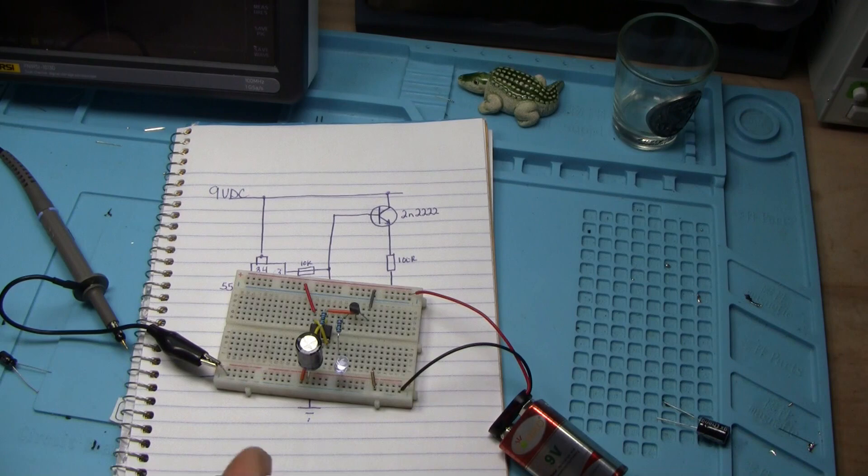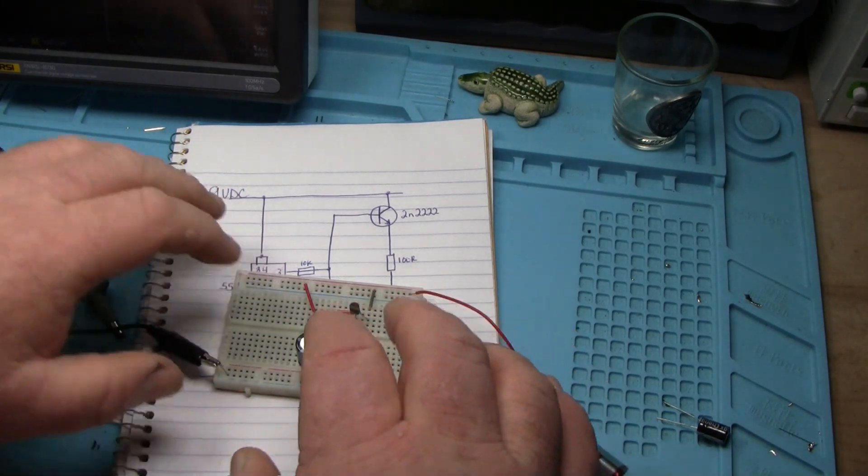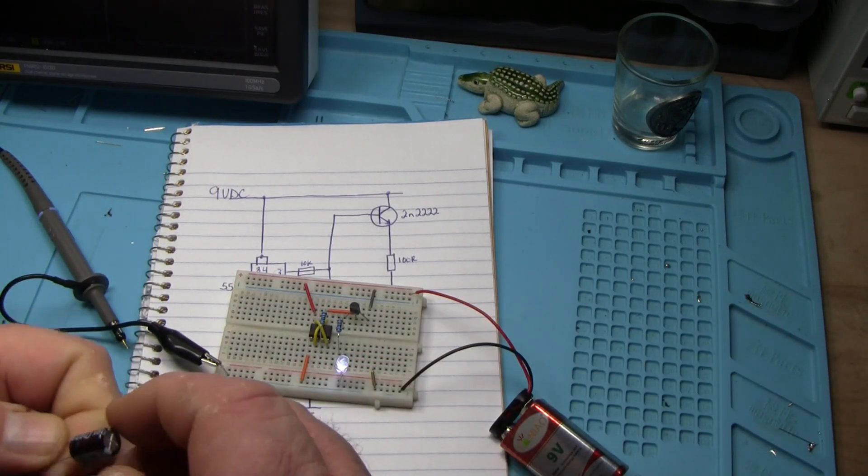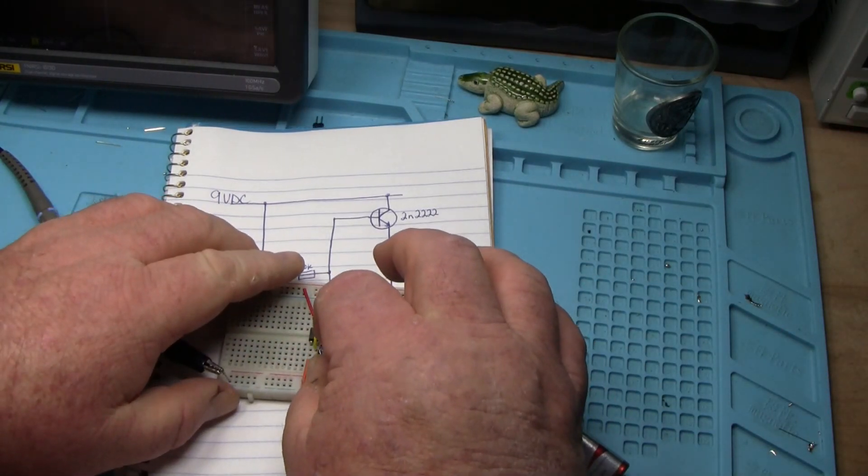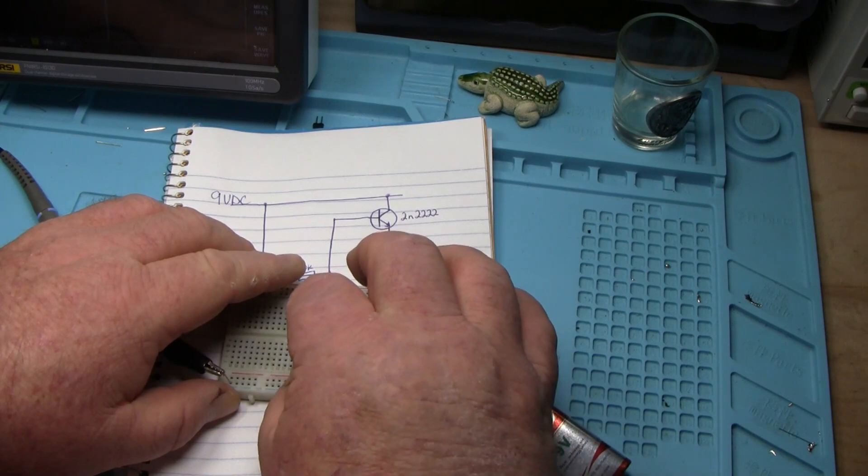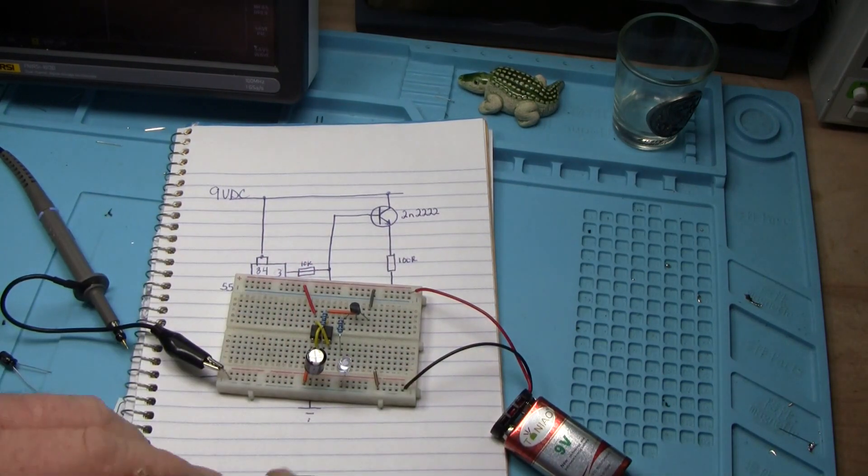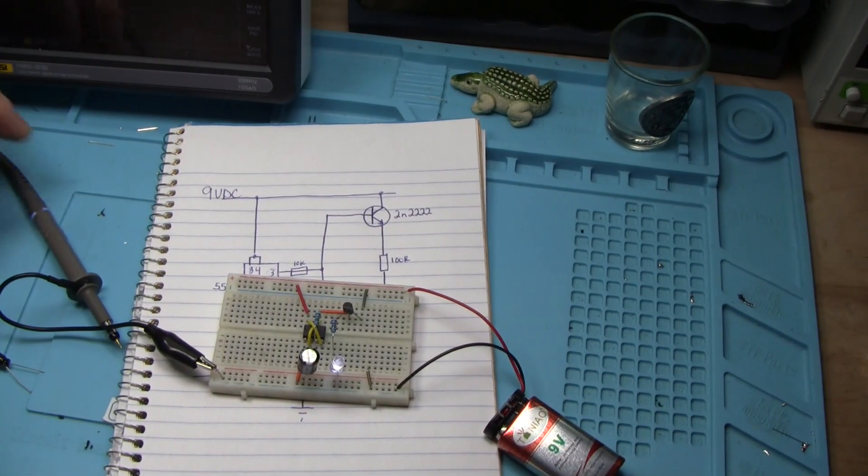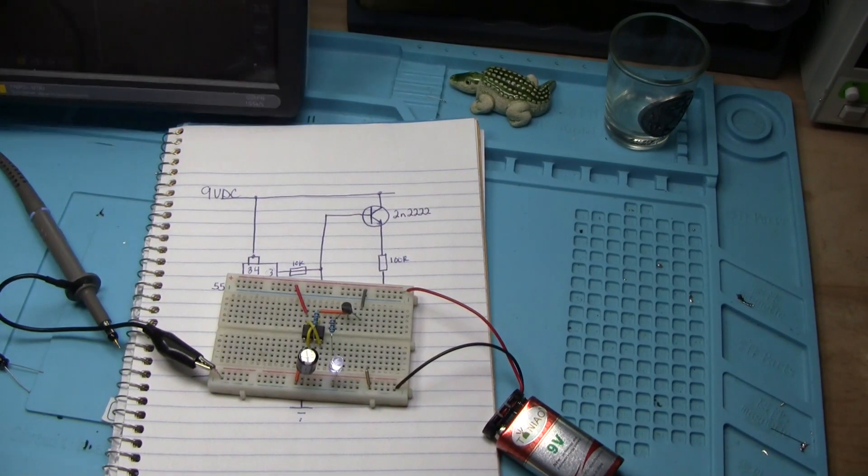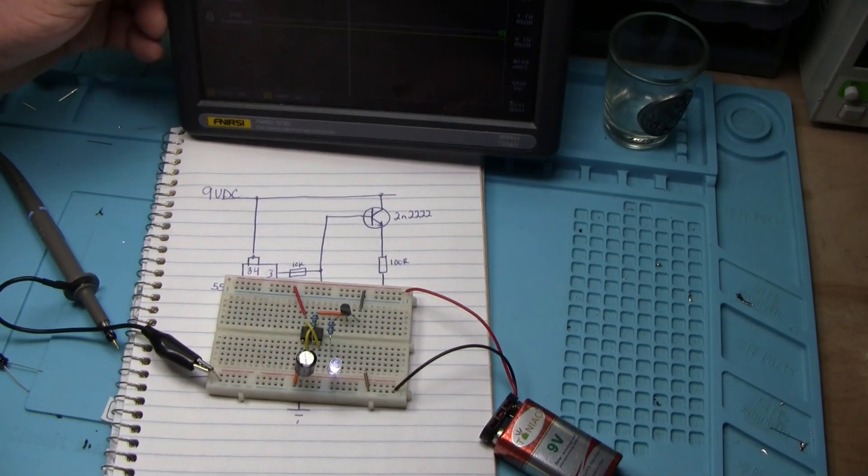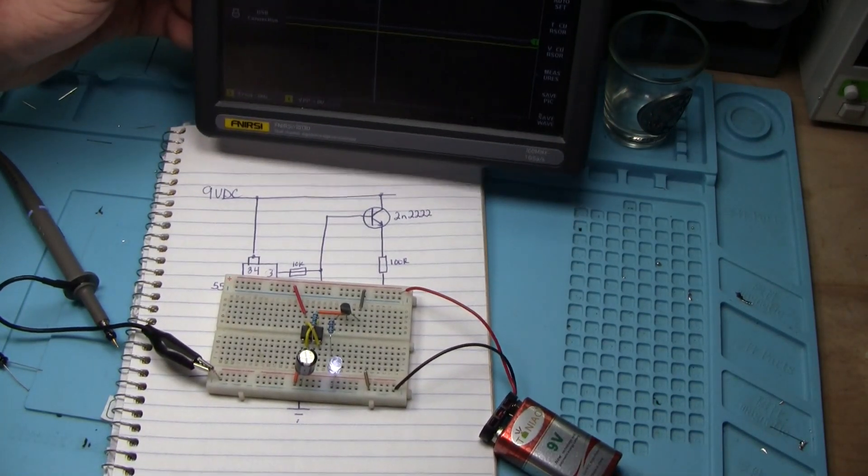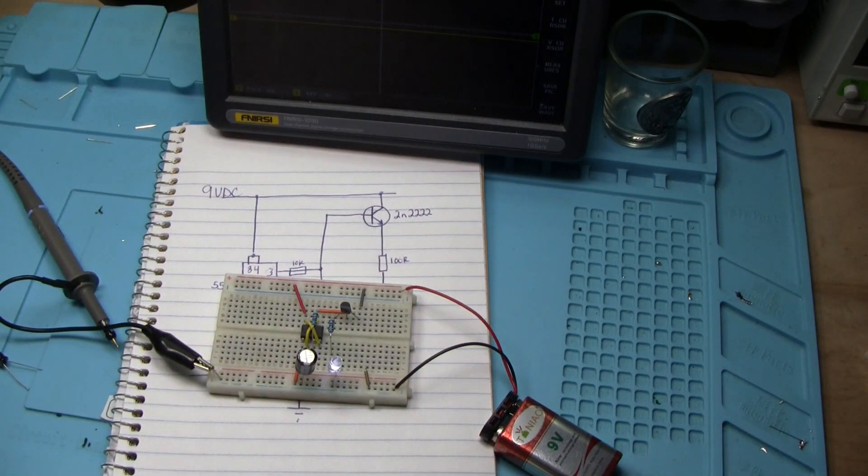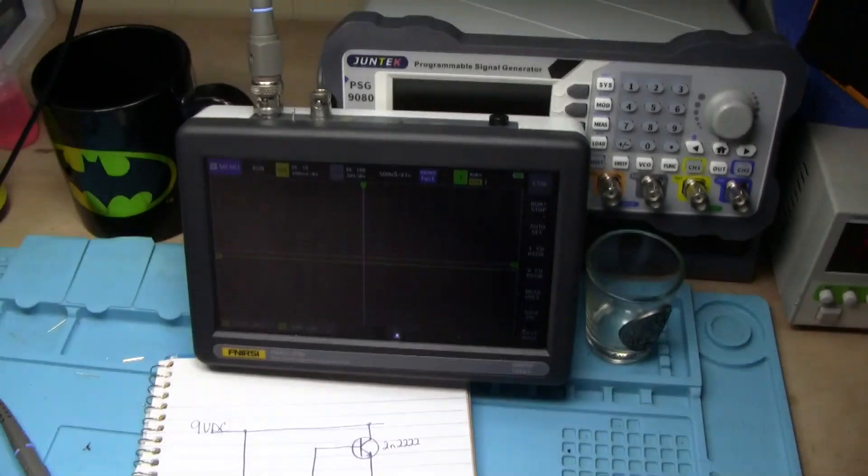Okay, so what we're going to do here is we're going to take a look at this. I'm going to take out the 1,000 microfarad capacitor, put in 100, just so this is easier to visualize what's going on. See how it's much faster now? So I'm going to bring in the scope here.